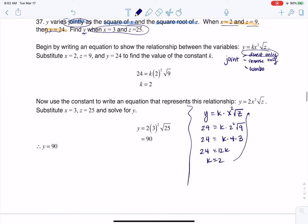Okay, so with that, instead of writing this general variation equation, I can make it more specific for my problem. So y equals 2x² times the square root of z. Now I'm going to plug in 3 and 25 and see what I'm left with.